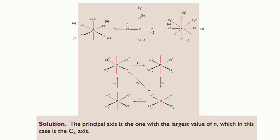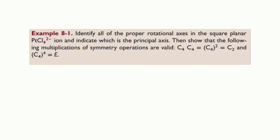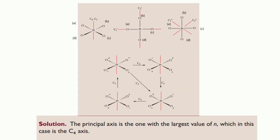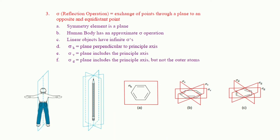A horizontal mirror plane (σh) is always perpendicular to the principal axis and there can only be one horizontal plane in any given molecule. The mirror plane shown in figure A is a horizontal mirror plane. A vertical mirror plane (σv) on the other hand always contains the principal axis.